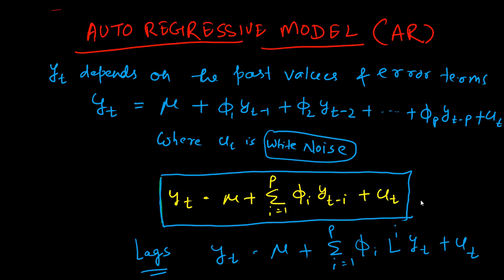In this video, we are going to learn the theory behind the autoregressive model in time series analysis. The autoregressive model, known in short as the AR model, is a type of model which depends on its past values. The series Yt depends on its past values and an error term.